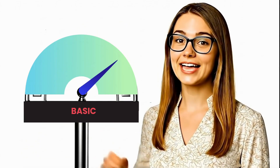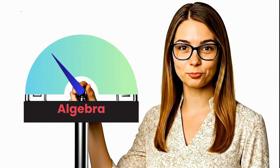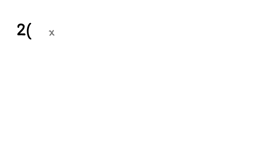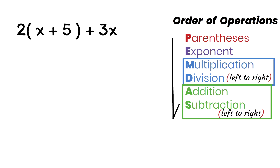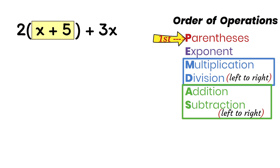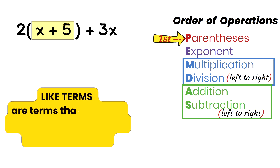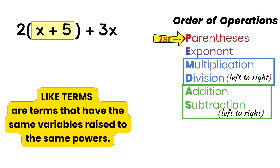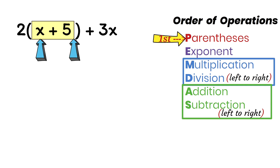Now it's time to dial it up and unleash PEMDAS in simplifying algebraic expressions. Let's simplify the expression 2(x + 5) + 3x. To simplify this expression into its simplest form, we'll use PEMDAS. According to PEMDAS, the parentheses comes first. This means we must deal with everything inside the parentheses first. We must add the x and the 5, but in algebra we can only add like terms — terms that have the same variables raised to the same powers. Since x and 5 are not like terms, we cannot combine them, so we leave them as they are.